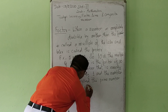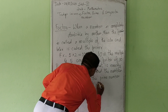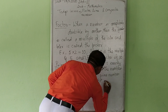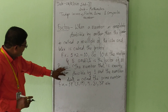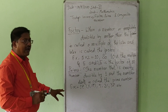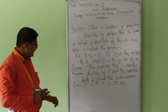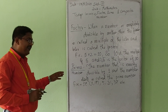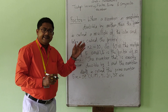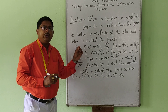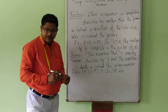Other numbers that are prime include 5, 31, 37, etc. So this is the definition of prime number. In another way you can write: that number that has only two factors — one and the number itself — is called a prime number.